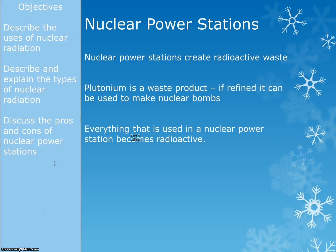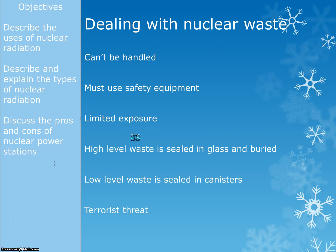Nuclear power stations create radioactive waste. Plutonium is one of the key waste products, and a big problem is that if someone gets enough of it, they can refine it to make nuclear bombs. Pretty much everything used in a nuclear power station will eventually become radioactive. When dealing with nuclear waste you want to avoid handling anything, using safety equipment which can be quite expensive.